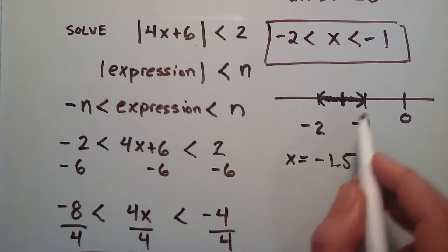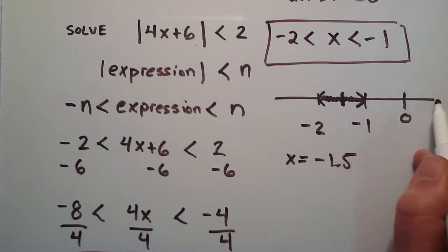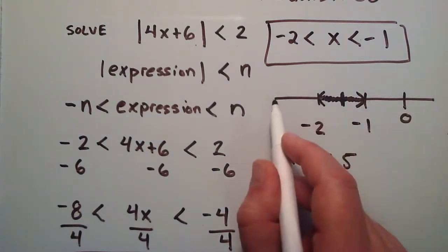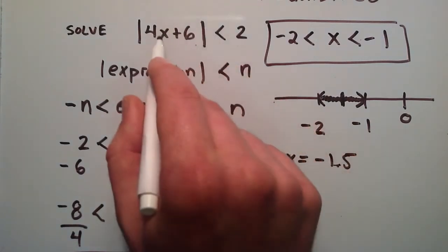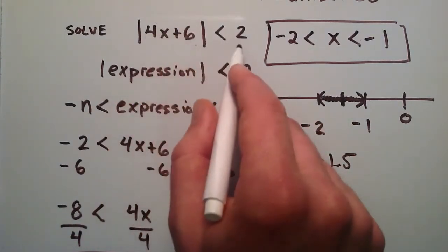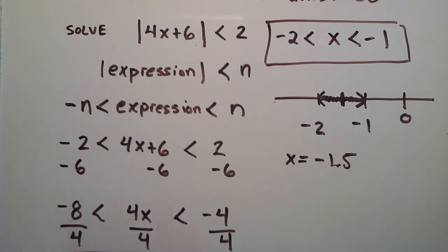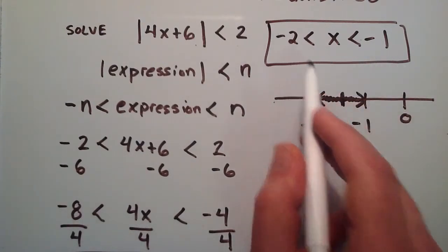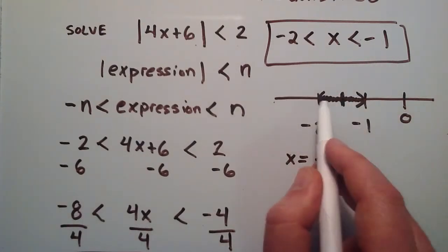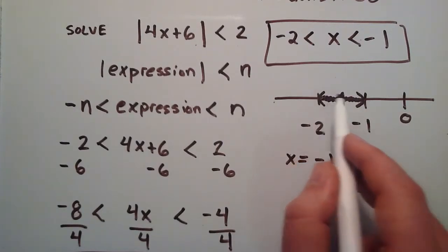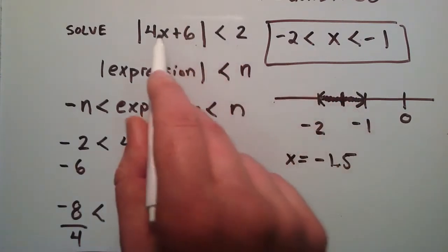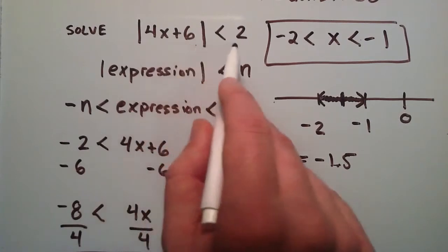If you pick something outside this range and plug that value in for x, you would produce a false statement. That's the idea of the solution. You have this range of values you can choose from, and any value in that range, when plugged in for x, will produce a true statement.